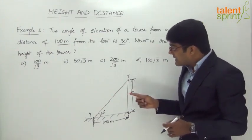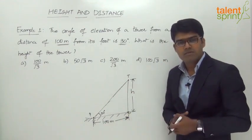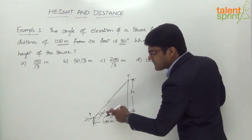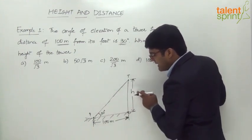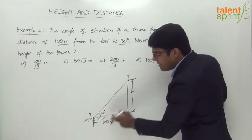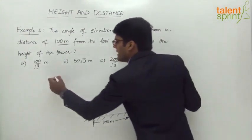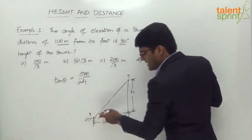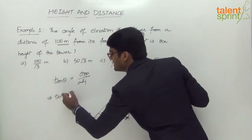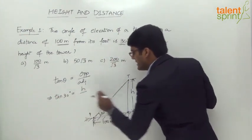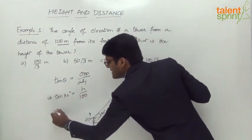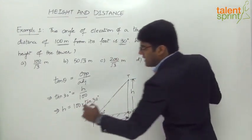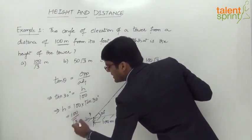The trigonometric ratio that connects the height and the distance of 100 meters is tan θ. Tan θ equals opposite side by adjacent side. With respect to angle θ, tan 30° equals h divided by 100, where h is the opposite side and 100 is the adjacent side. Therefore, h equals 100 × tan 30°. Since tan 30° is 1/√3, the height h is 100/√3.